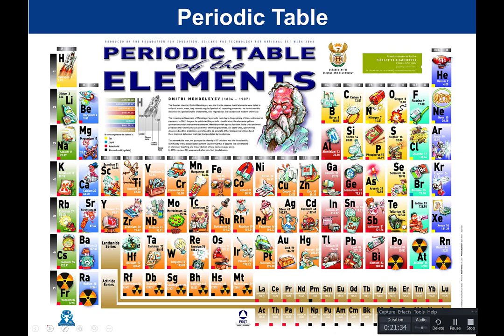Here is a different periodic table that shows some uses for some of these elements. For example, fluorine is used in toothpaste because it will inhibit bacterial growth, protecting the health of your teeth. Lithium is used in batteries. This is just to show you some different uses for these different elements — by no means do you need to memorize this table.